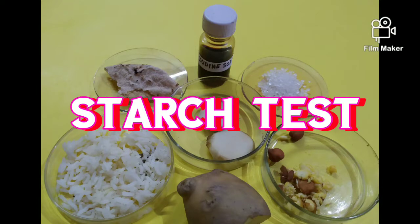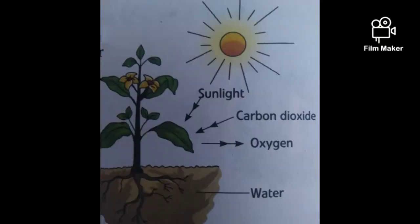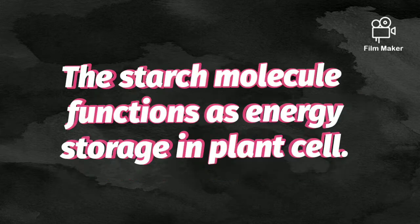Hello Learners, it's Jyotipanth again, here with a new activity for you — the starch test. During the process of photosynthesis, carbohydrate, that is glucose, is synthesized. In plants, this carbohydrate converts into starch and is stored as reserved food. In some plants, this carbohydrate converts into proteins and fats.